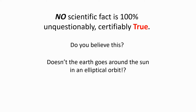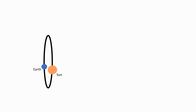For example, doesn't the Earth go around the Sun in an elliptical orbit? You may first think that this must be true, because if you look in the Sunday supplement of any newspaper that illustrates the solar system, you'll see the Earth going around the Sun in an elliptical orbit. However, even if we ignore the fact that both the Sun and the Earth are revolving around the center of mass of the solar system...